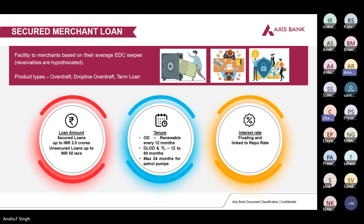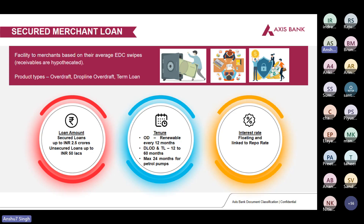Drop line overdraft is an overdraft facility given for a tenure of 36 months where every single month the limit drops — the outstanding drawing limit reduces month on month.